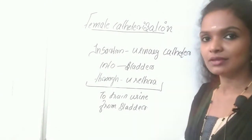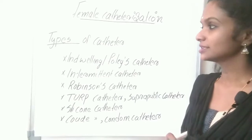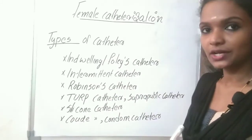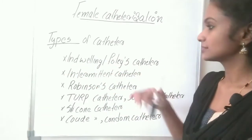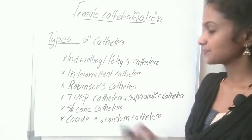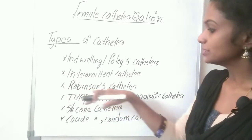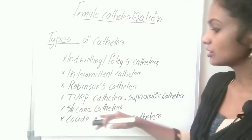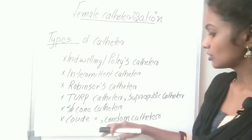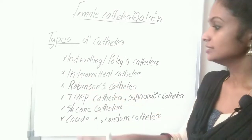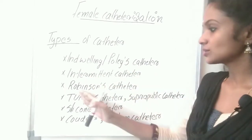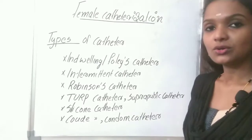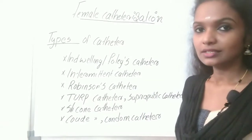Here we are going to study about female catheterization. There are different types of catheters available: indwelling or Foley catheter, intermittent catheter, Robinson's catheter, Tharp catheter, suprapubic catheter, silicone catheter, coude catheter, and quantum catheter. These are the main catheters available for catheterization.